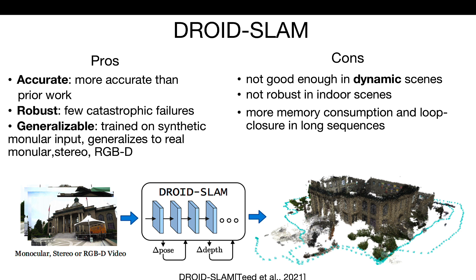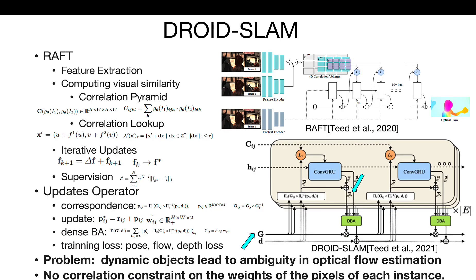Recently, a learning-based dense SLAM system, DroidSLAM, demonstrates better accuracy and robustness than traditional methods. However, we find that it is not good enough in dynamic scenes. DroidSLAM is built on RAFT, a state-of-the-art flow estimation method. RAFT first extracts features and then constructs a 4D correlation volume, defines a lookup operator which generates a feature map by indexing from the correlation volumes, and an update operator that produces an update direction delta f applied to the current estimate. DroidSLAM presents a dense bundle adjustment layer to iteratively update the residuals of depth and camera pose using the estimated revised flows and weights.